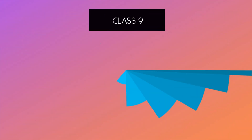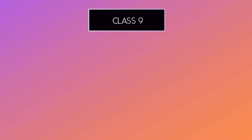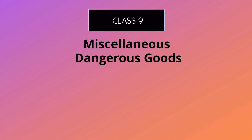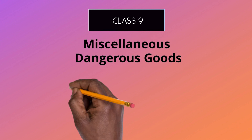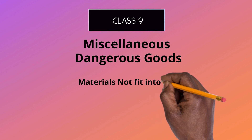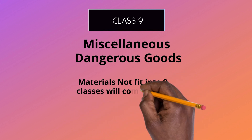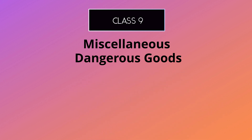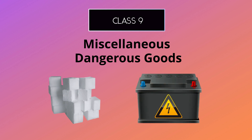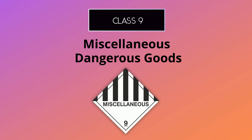The ninth and final class of dangerous goods is miscellaneous dangerous goods. This class includes materials that do not fit into any of the other eight classes — such as dry ice, certain types of asbestos, and batteries. The symbol used to identify class nine dangerous goods is seven black stripes on the upper half and a white background with number nine.